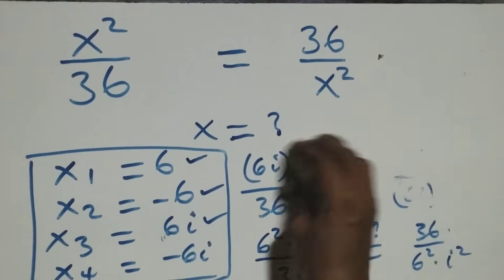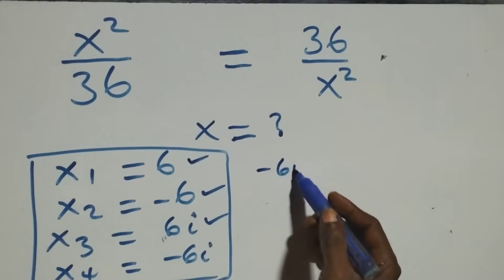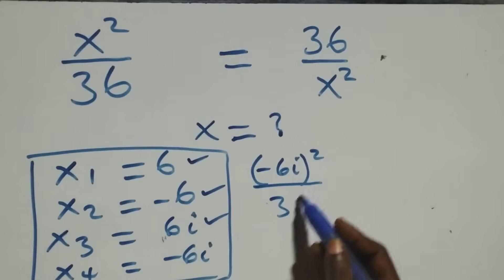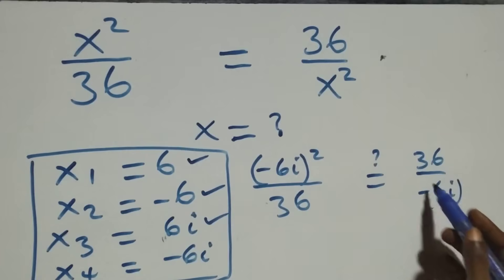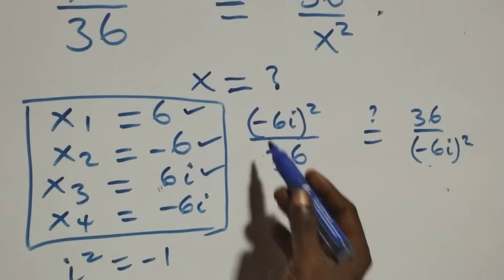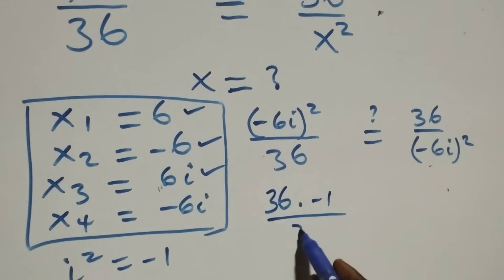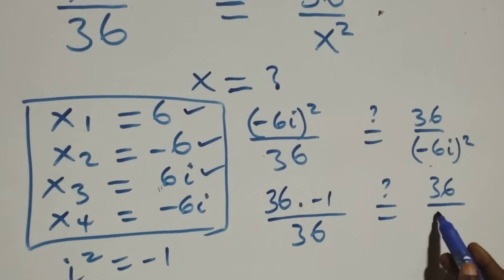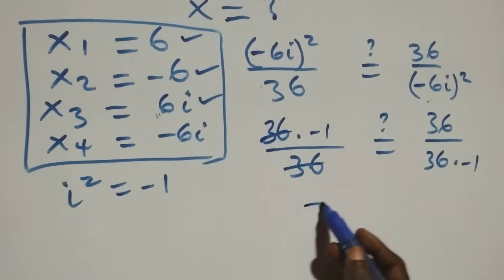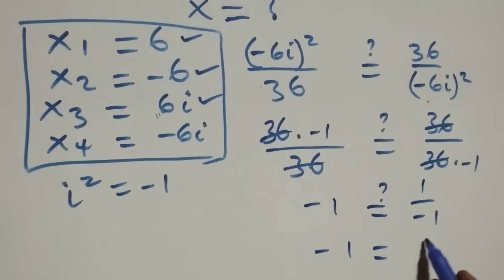For x equals minus 6i, substituting gives (minus 6i)² over 36, equal to 36 over (minus 6i)². Squaring the negative makes it positive, so (minus 6i)² equals 36 times i² equals 36 times minus 1. We get minus 1 on both sides: minus 1 equals minus 1. Left-hand side equals right-hand side.